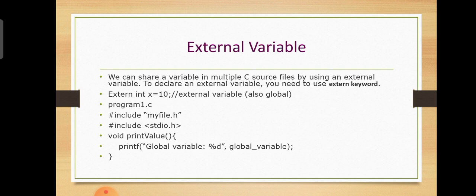We can use the External variable in multiple C source files by using the extern keyword. To declare an external variable, you need to use the external keyword. You can use the external variable across files as well.